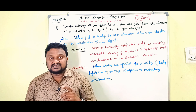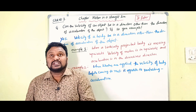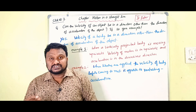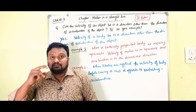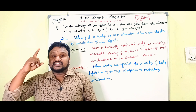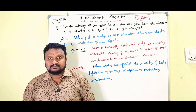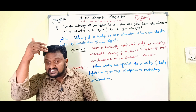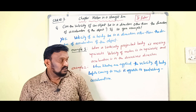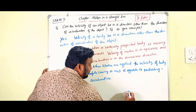The first example: when the body is vertically projected and it is moving in the upward direction, the direction of velocity is in the upward direction, but the acceleration is in the downward direction.